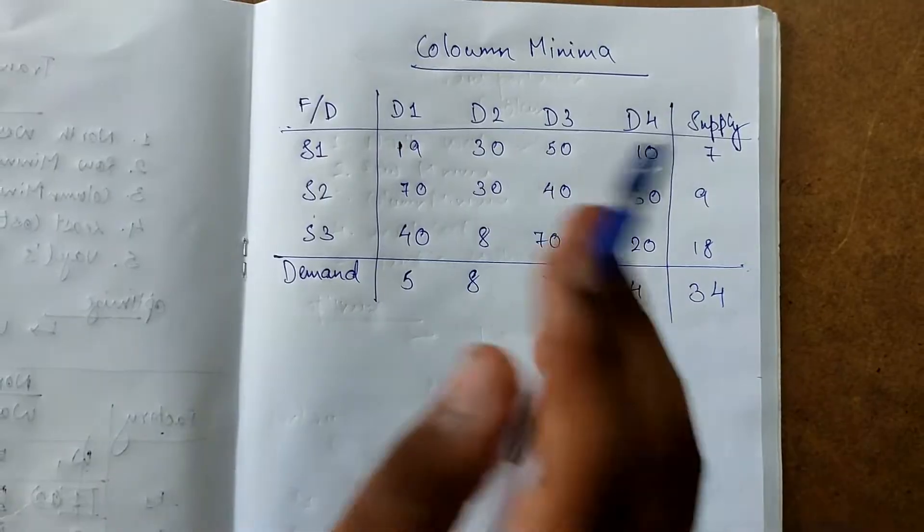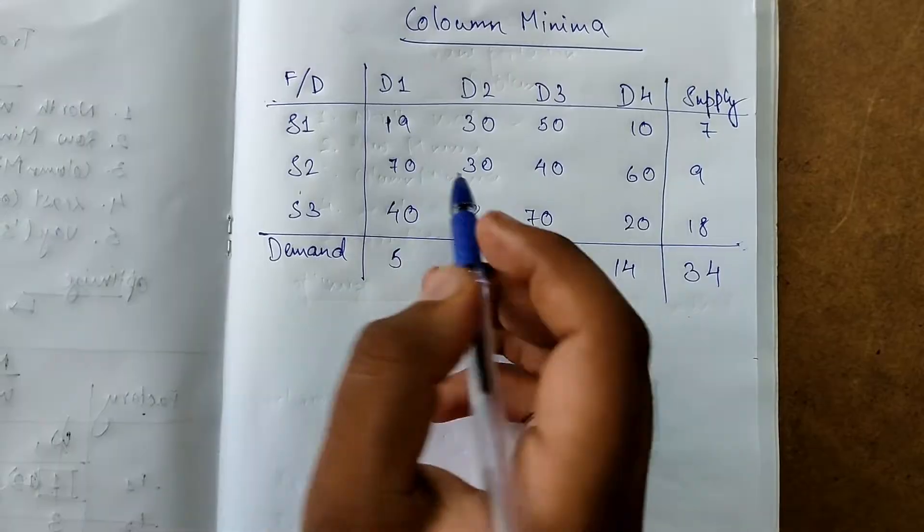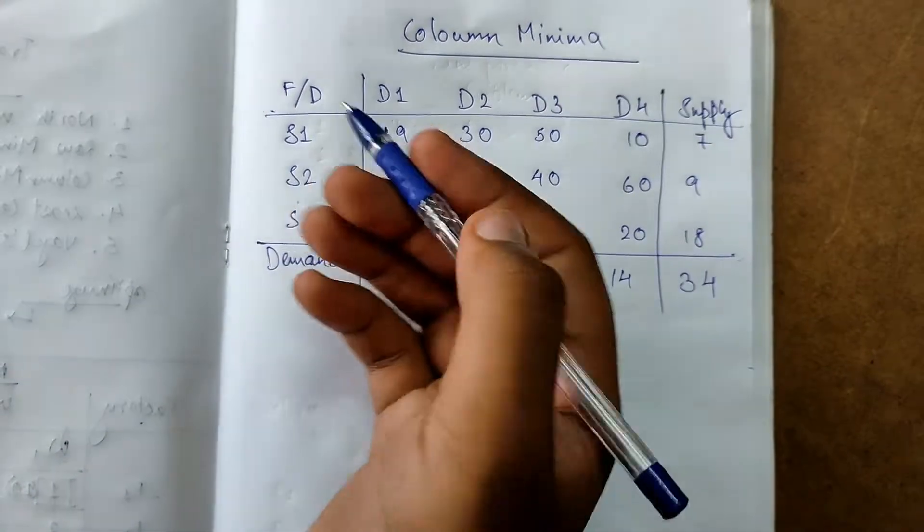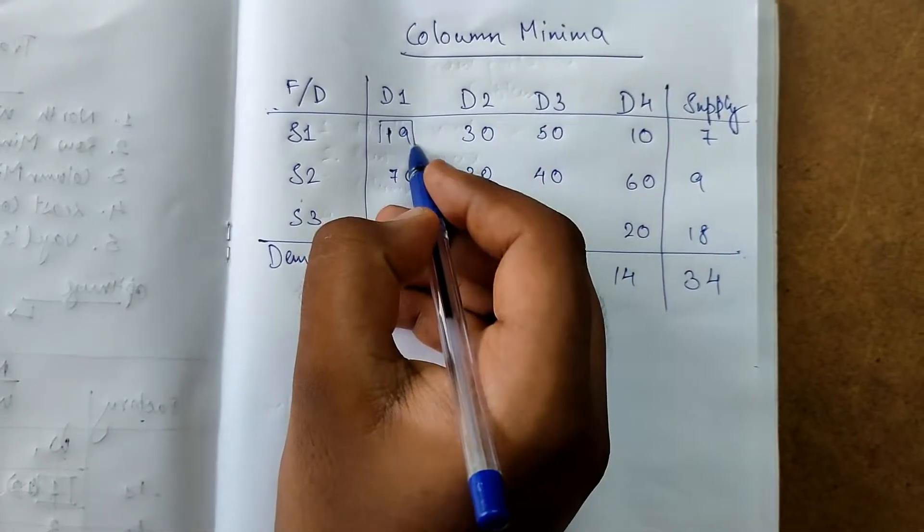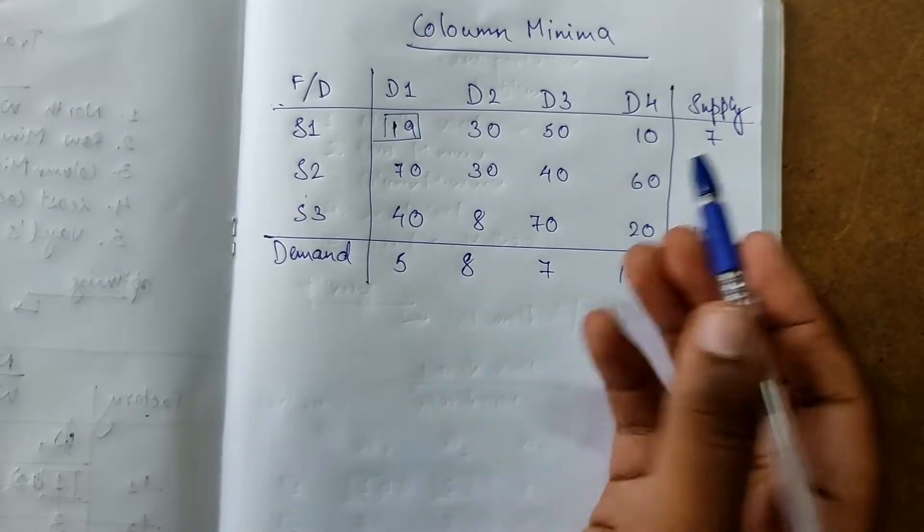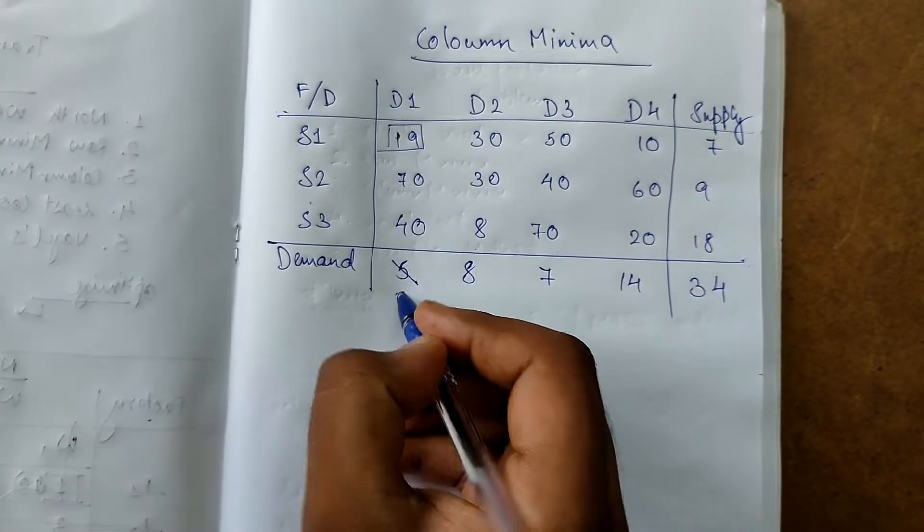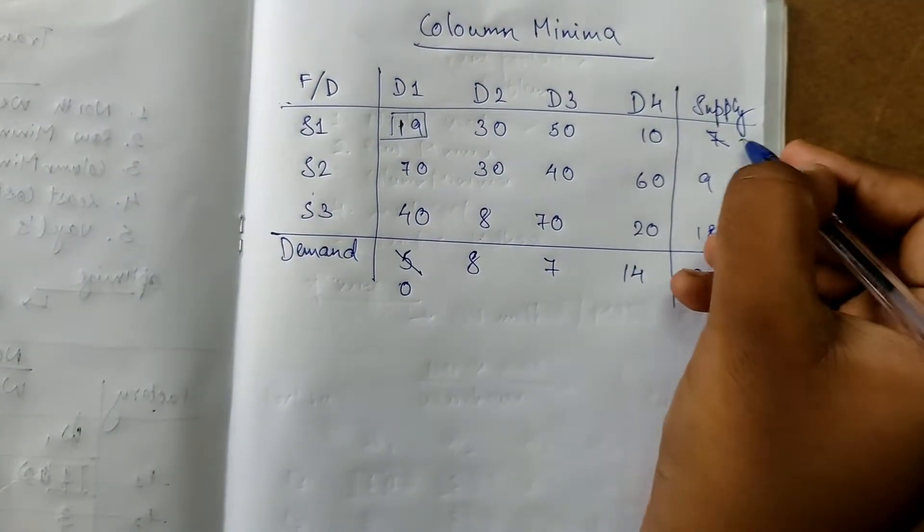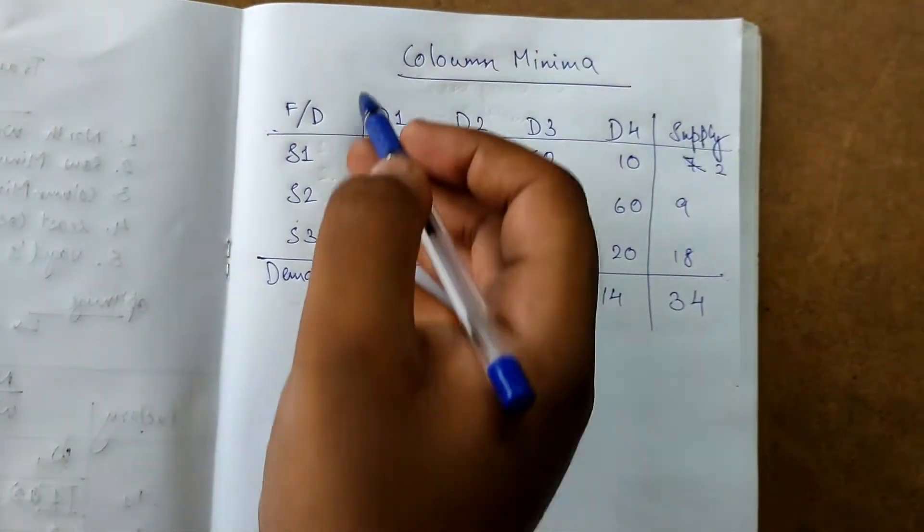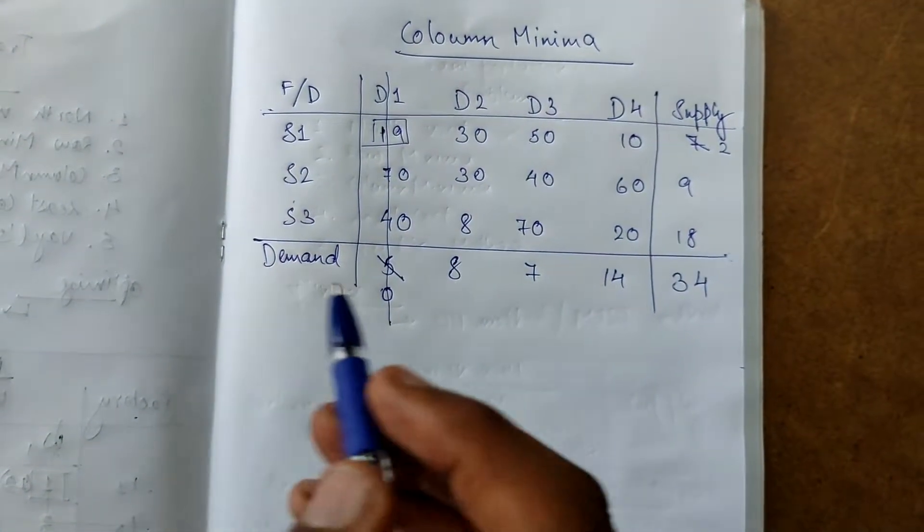We will choose column minima. We will choose the first column. First column, we will find which is the least value. 19 is the least value. In 19, we choose the extreme values: demand and supply, 5 and 7. We will minus 5 from 5, this is 0 and this becomes 2. This row and column, we strike off. Here we multiply 5, so 19 into 5.